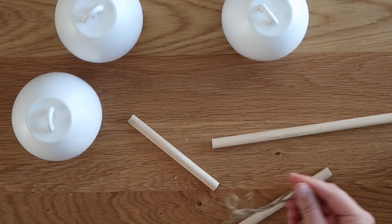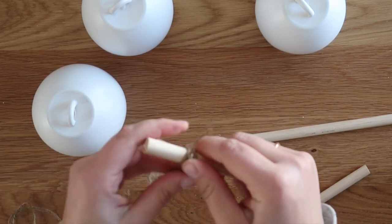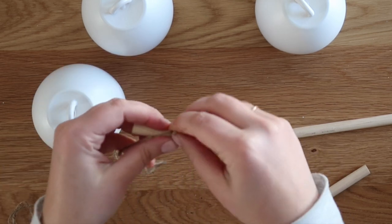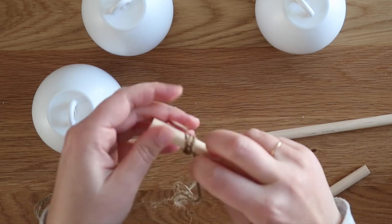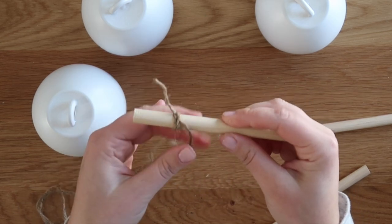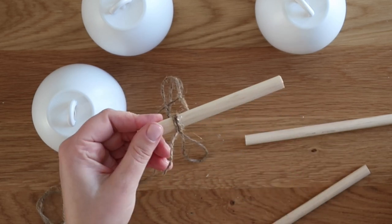And then I went ahead and just took some plain old Dollar Tree twine, wrap it two or three times around the wooden dowel, tie it in a knot, and then secure the ends with hot glue because you don't want to risk that knot coming undone. So I just added hot glue and folded the tail ends down.